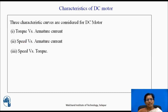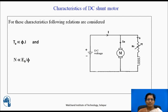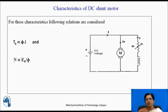Three characteristic curves are considered for DC motor: torque vs. armature current, speed vs. armature current, and speed vs. torque. For these characteristics, the following relations are considered: armature torque is directly proportional to flux and the armature current, and speed is directly proportional to back EMF and inversely proportional to flux.